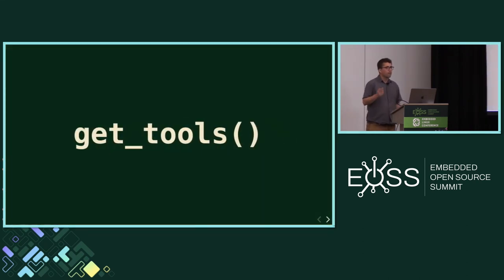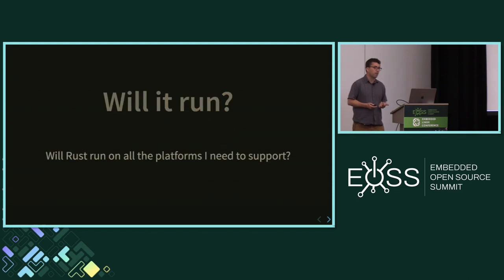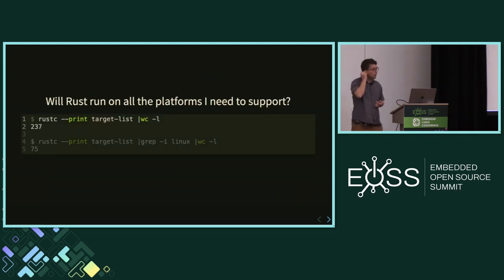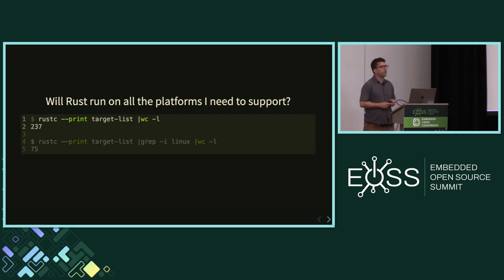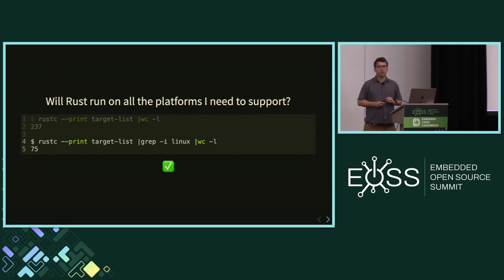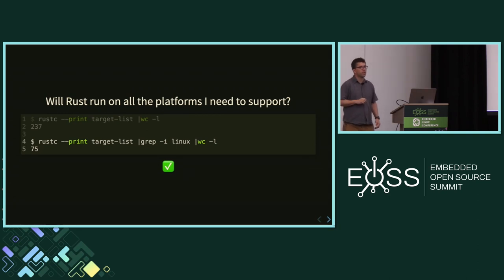So let's get into it. The first question is: is Rust going to run on my platform, on my board? If you're not sure, I'd recommend running `rustc --print target-list` — it will tell you all the supported targets. When I did that, I had 237 supported targets; zooming in on Linux, you have 75 targets. My point is that although there are some platforms not supported by the Rust compiler, they're pretty esoteric.